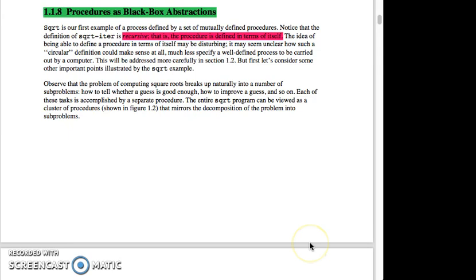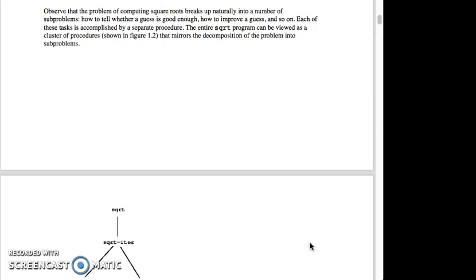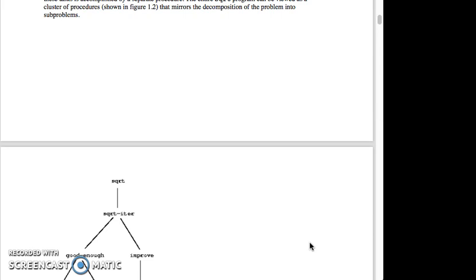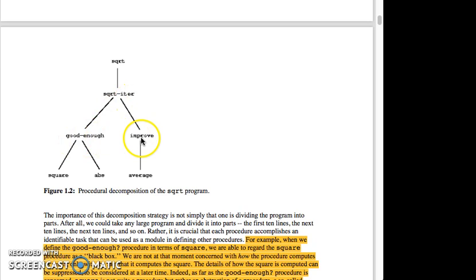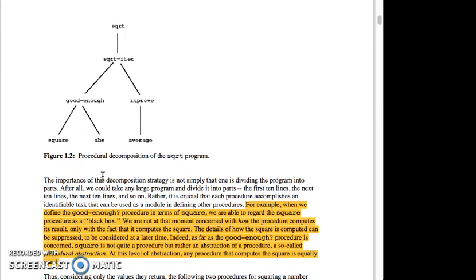Observe that the problem of computing square roots breaks up naturally into a number of sub-problems: how to tell whether a guess is good enough, how to improve the guess, and so on. Each of these tasks is accomplished by a separate procedure. The entire square root program can be viewed as a cluster of procedures, shown in figure 1.2, that mirrors the decomposition of the problem into sub-problems. Square root is into square root iter, good enough goes into improve, improve needs average, good enough needs square and absolute value.